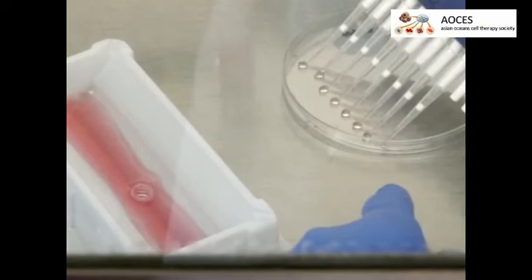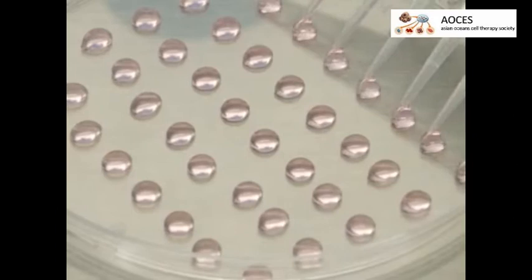Use a multi-channel pipette to form 20 microliter droplets on the inner surface of a 10-centimeter dish lid. In all, pipette 5 rows of 8 drops for a total of 40 drops.